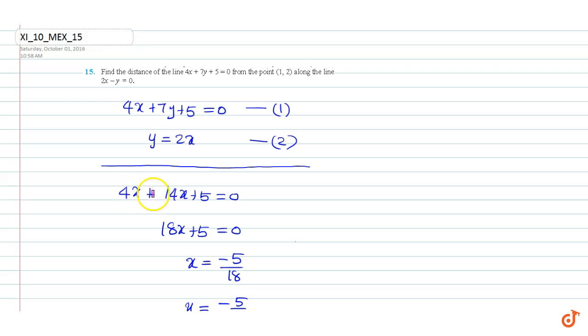That is, 4x plus 14x plus 5 equals 0. That is, 18x plus 5 equals 0. This gives x equals minus 5 by 18.